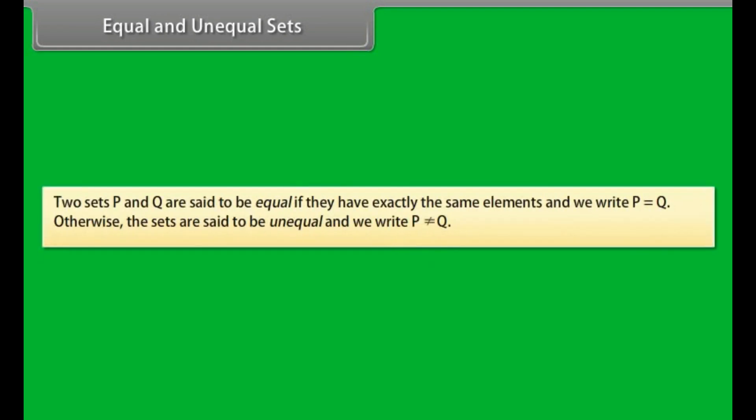Equal and unequal sets. Two sets P and Q are said to be equal if they have exactly the same elements, and we write P equals Q. Otherwise, the sets are said to be unequal and we write P is not equal to Q.